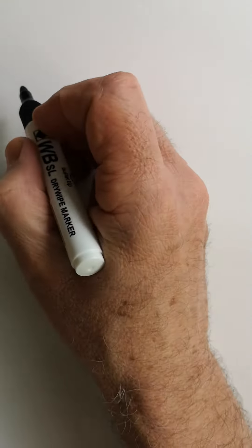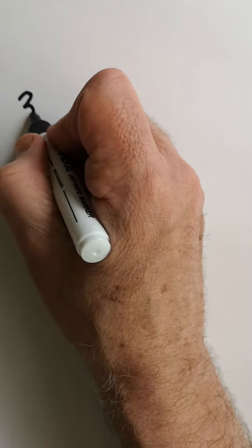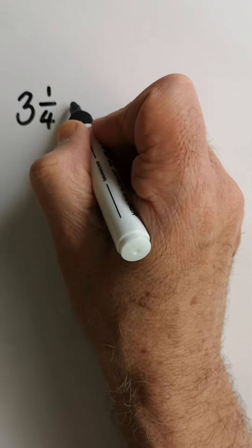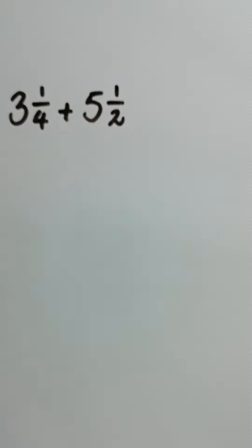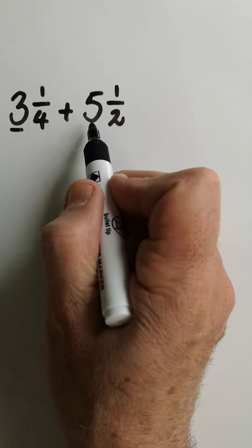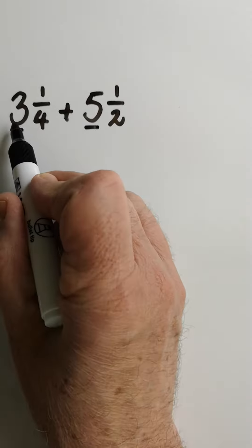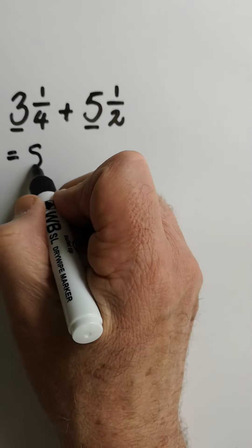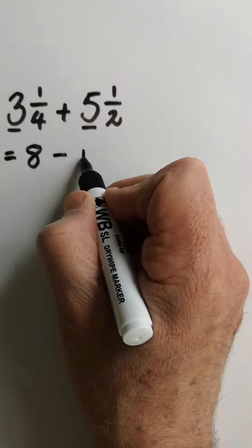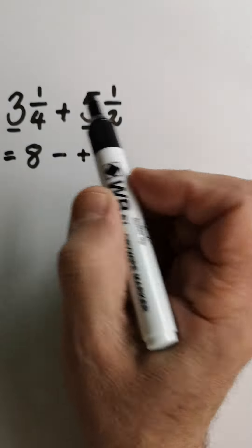We're going to do a mixed number sum: three and a quarter plus five and a half. How are we going to do that sum? Quite simply, let's look at the whole numbers first. Three plus five is equal to eight.